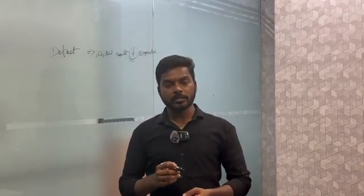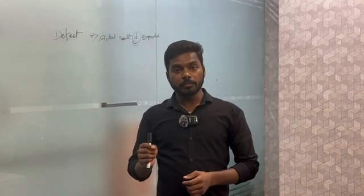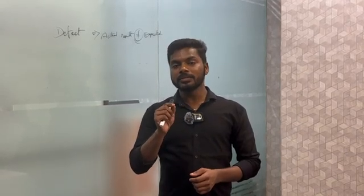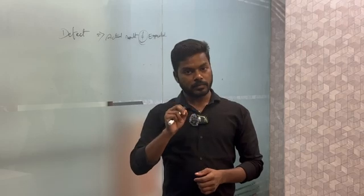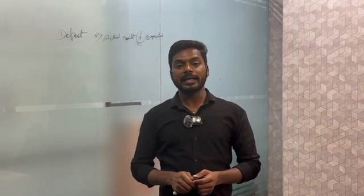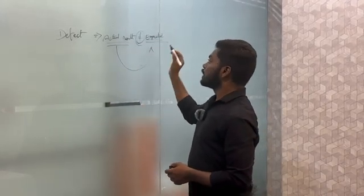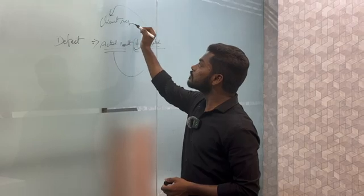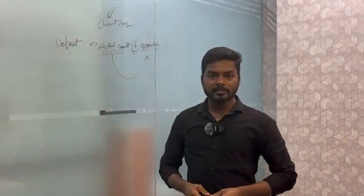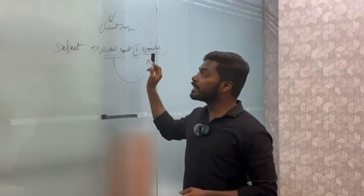Let me explain it with an example. Suppose we have a client and the client has a requirement, and there is a developer who works on that requirement using a coding language. After completion of the coding, the developer gives the code to the testers, and the testers will test it. After testing, there will be some output. That output is called actual result, and this actual result is compared with the expected result — nothing but the client requirement. If the actual result does not equal the expected result, then only it is called a defect.